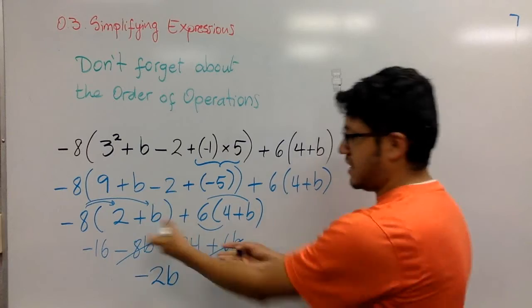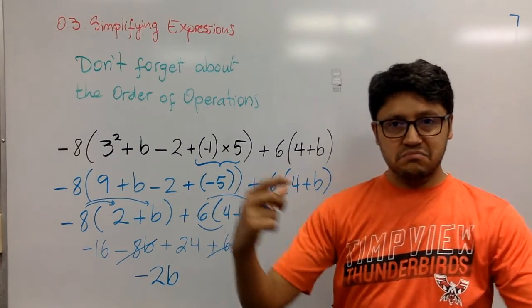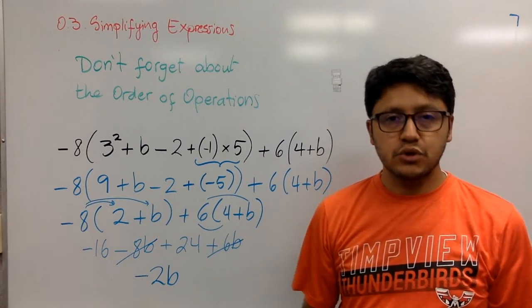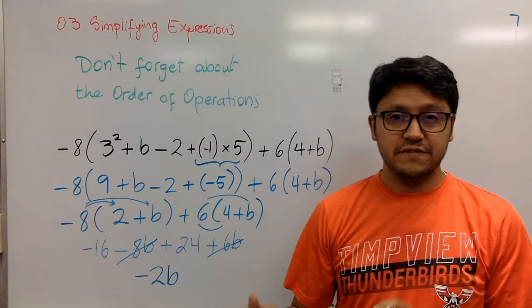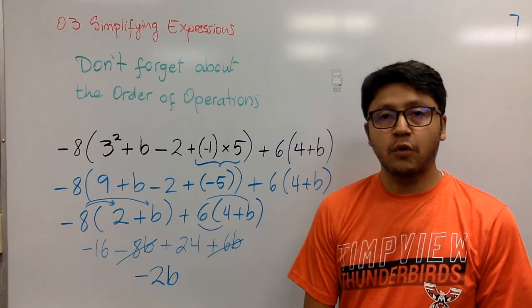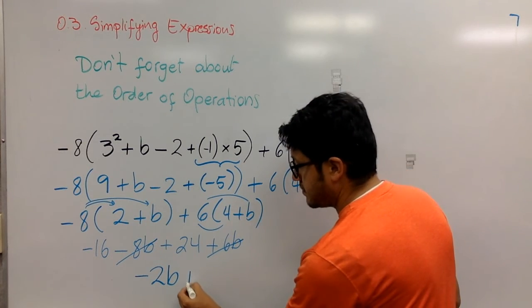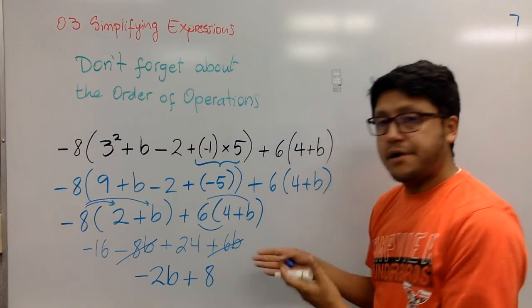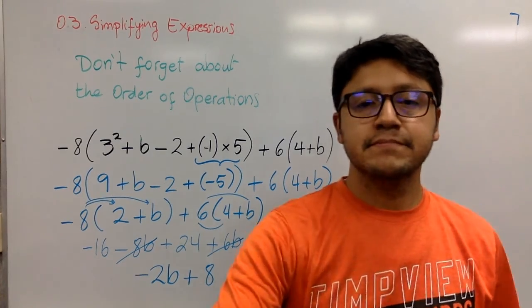And I usually cross them out. It depends on what you like to do, but make sure that you do it in an orderly fashion. Alright? And now we have negative 16 plus 24. It's 8. And that's it. We are done. Okay? Thank you.